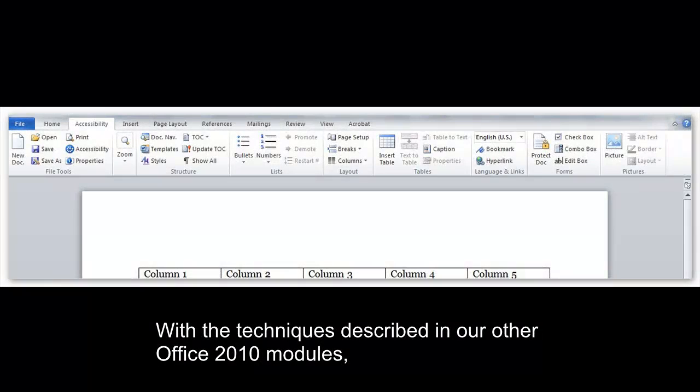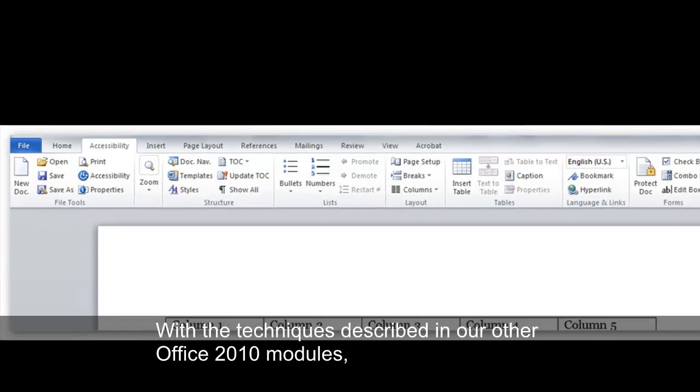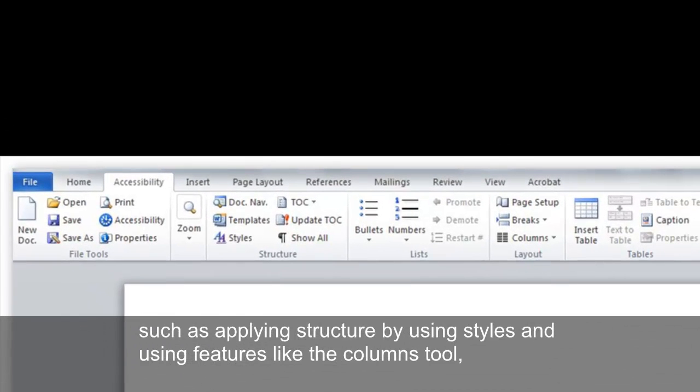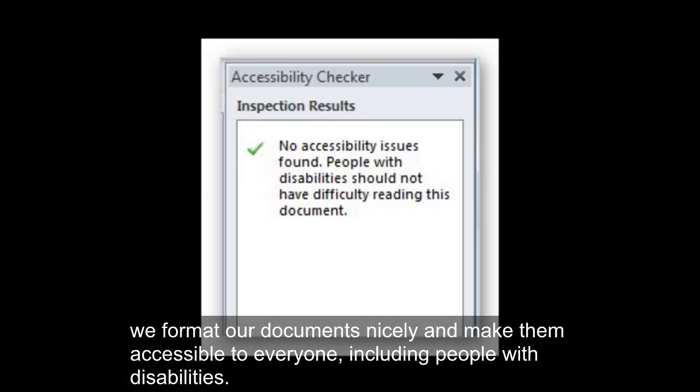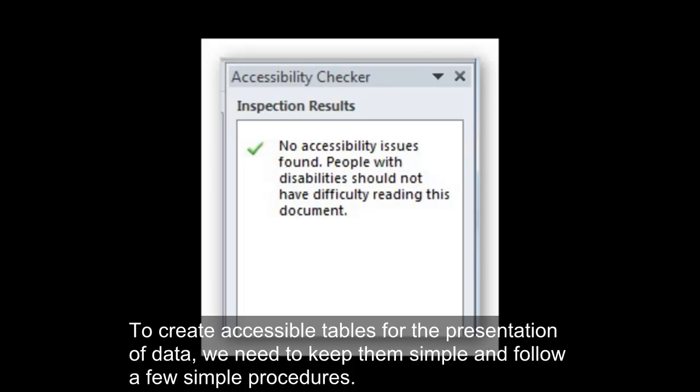With the techniques described in our other Office 2010 modules, such as applying structure by using styles and using features like the columns tool, we format our documents nicely and make them accessible to everyone, including people with disabilities. To create accessible tables for the presentation of data, we need to keep them simple and follow a few simple procedures.